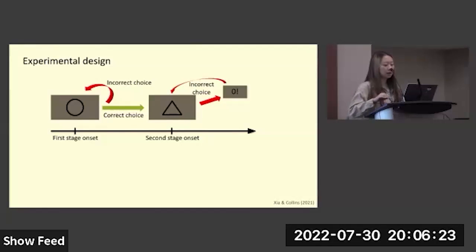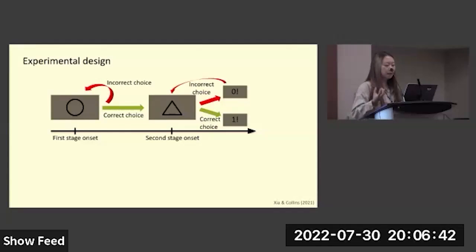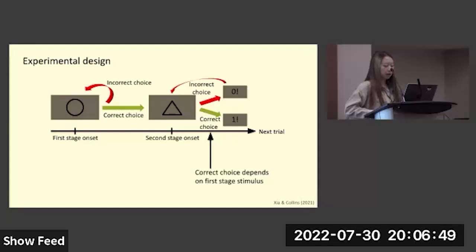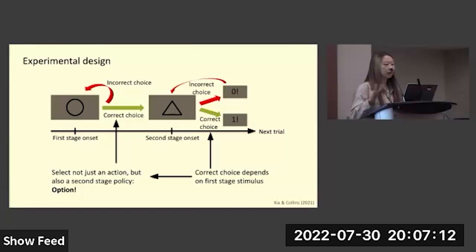In the second stage, if the participant makes an incorrect choice, they see a feedback of zero-point reward — no reward — and the experiment moves back so they can try again. Until they get the correct choice, the participant will see a feedback of a one-point reward, which leads to the next trial. We designed the experiment so that the correct choice in the second stage depends on the stimulus of the first stage, meaning when making a decision in the first stage, the participant is not only choosing an action for that stimulus but also choosing an action policy to generate more actions in the second stage. That is an option.